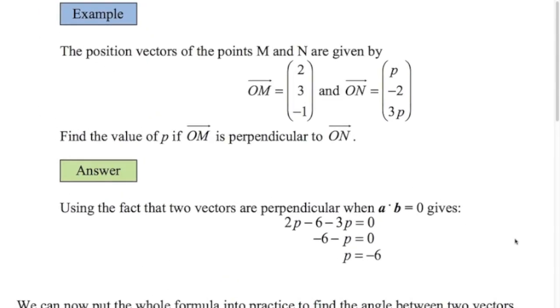In this example, we've got two vectors and we've got an unknown in one of the vectors. In O to N, the position vector of the point N, we've got these values of P. P's are constants. And we want to know what value of P makes these two vectors perpendicular. So we need to know that the dot product is zero when two vectors are perpendicular. So doing the dot product here, two times P plus three times minus two plus minus one times three P is zero. We'll do that and solve that equation. We get P is equal to negative six.